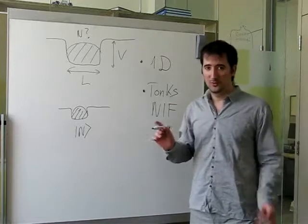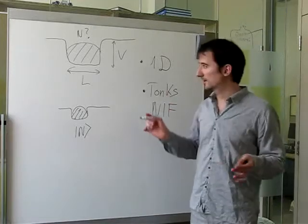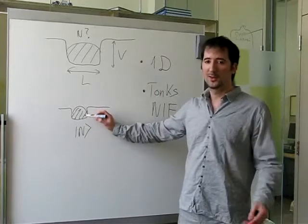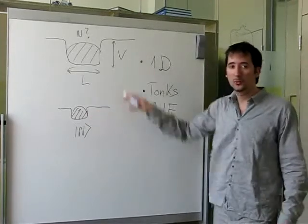It's clear that if we don't have repulsion between the particles, then we can put as many particles as we want in the trapping potential, so the whole procedure won't work.